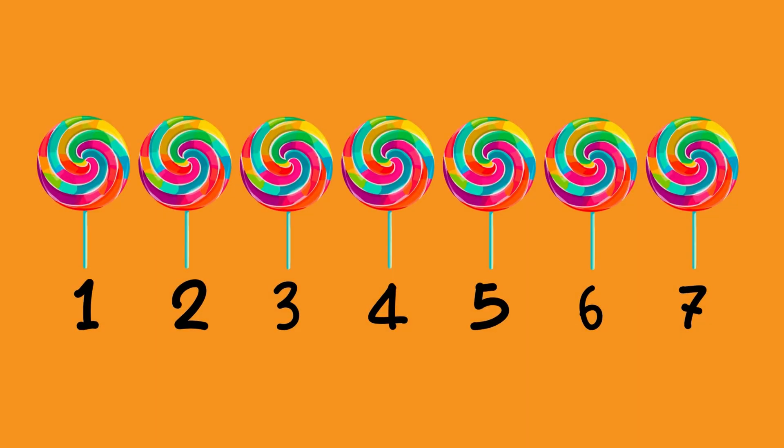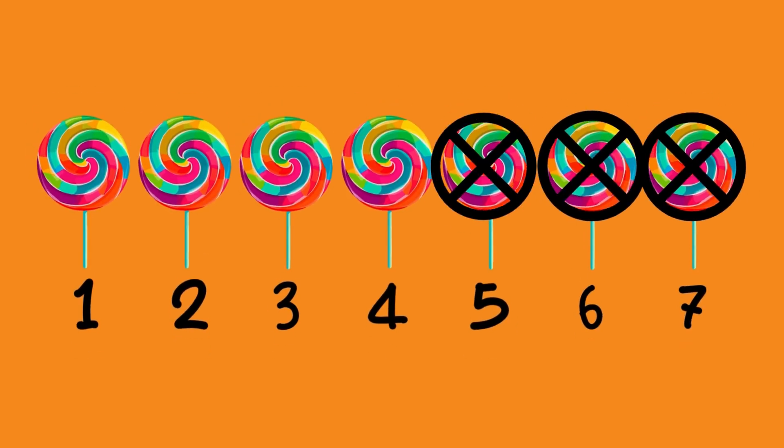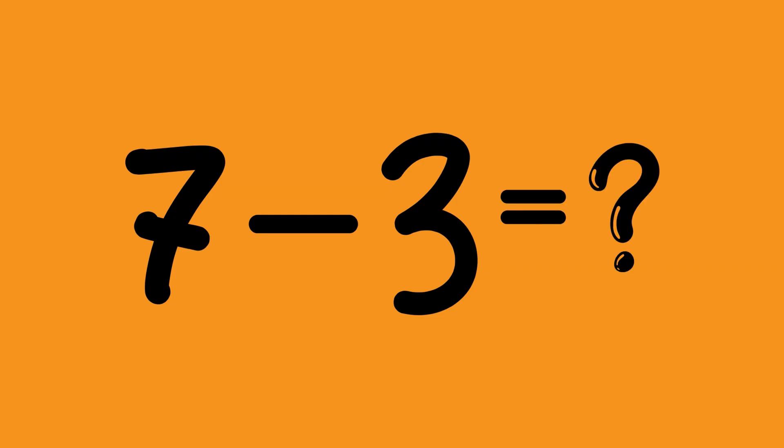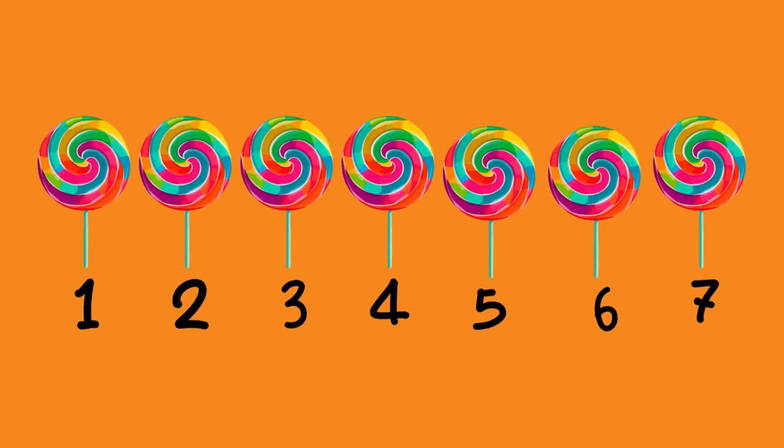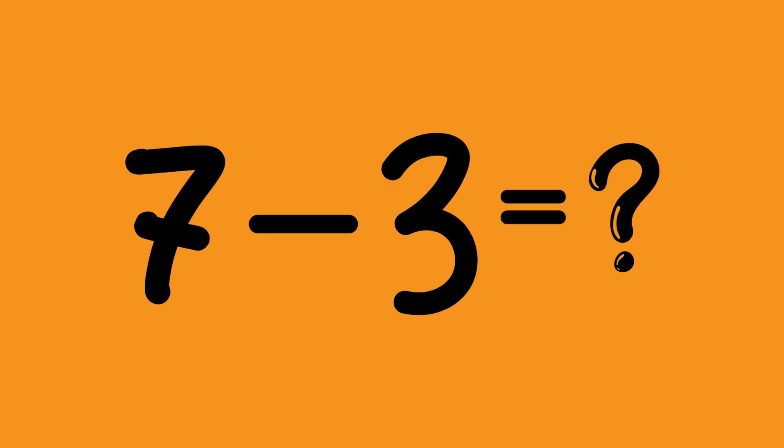Let me show you how to use it. For example, you have seven sweets, right? Seven sweets. And then you give your brother three sweets. So it means it is seven minus three. It is seven minus three equals how much you are left with. So if you have seven sweets and you give your brother three, that is seven minus three equals what you are left with.